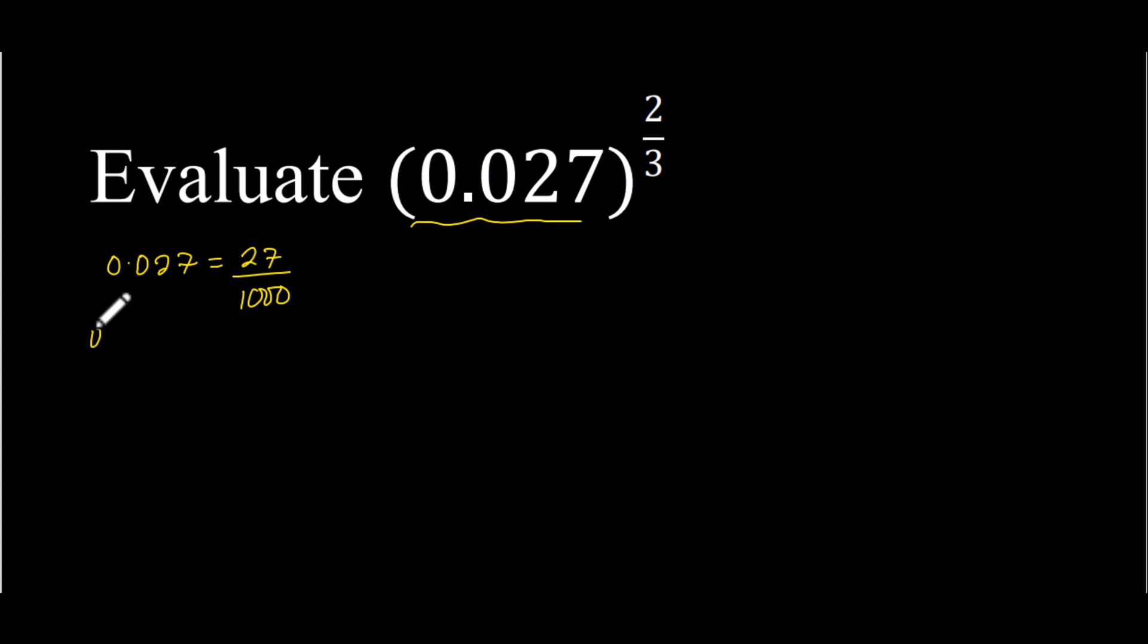And therefore, 0.027 to the power of 2/3 is the same as 27 over 1000, all raised to the power of 2/3.